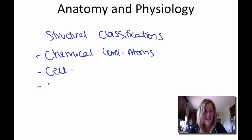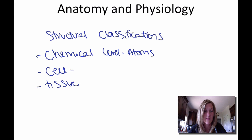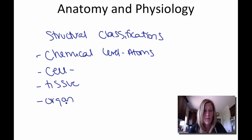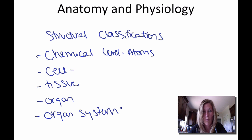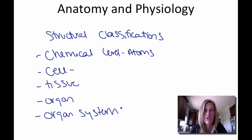Several cells that work together form a tissue. Tissues are groups of cells that have a similar function. Then we have an organ, which is two or more tissue types working together for a specific function. And last is the organ system — organ systems are groups of organs working together to accomplish a common purpose. You will need to be able to differentiate between each of those structural classification levels.